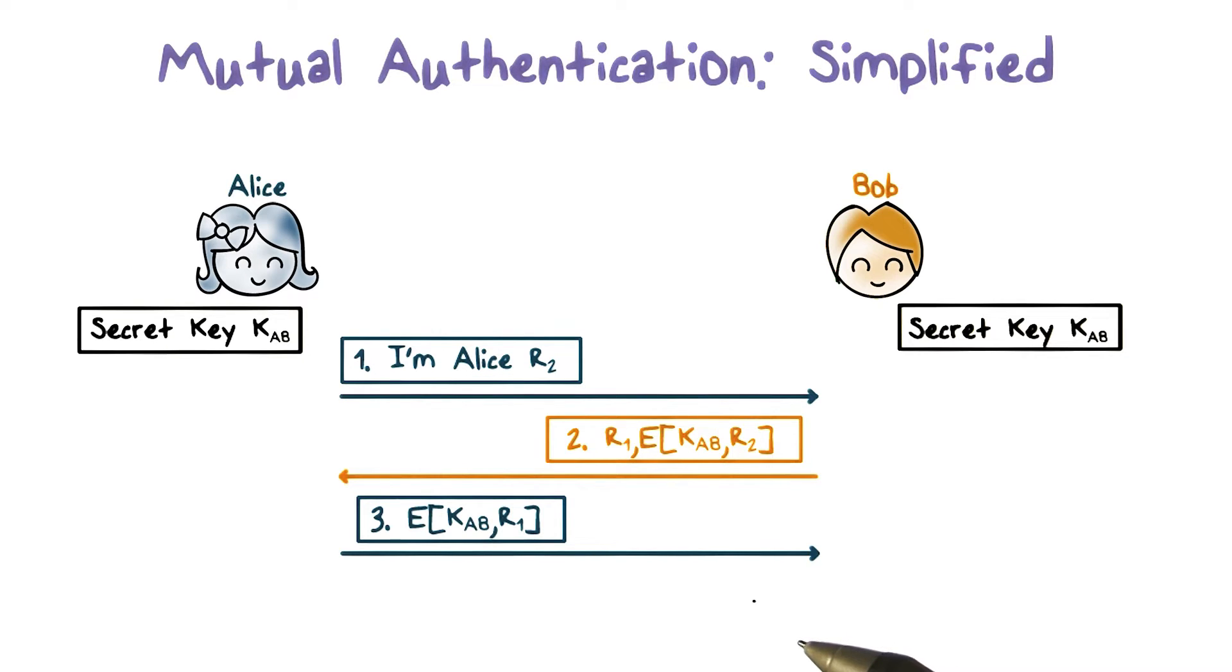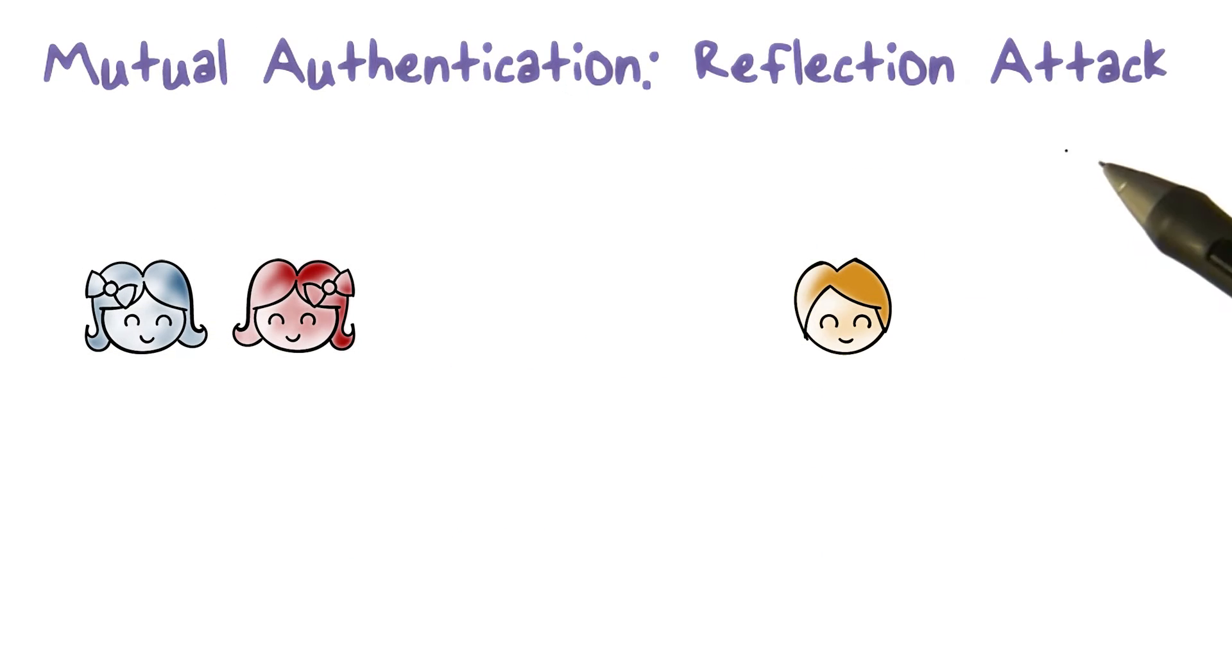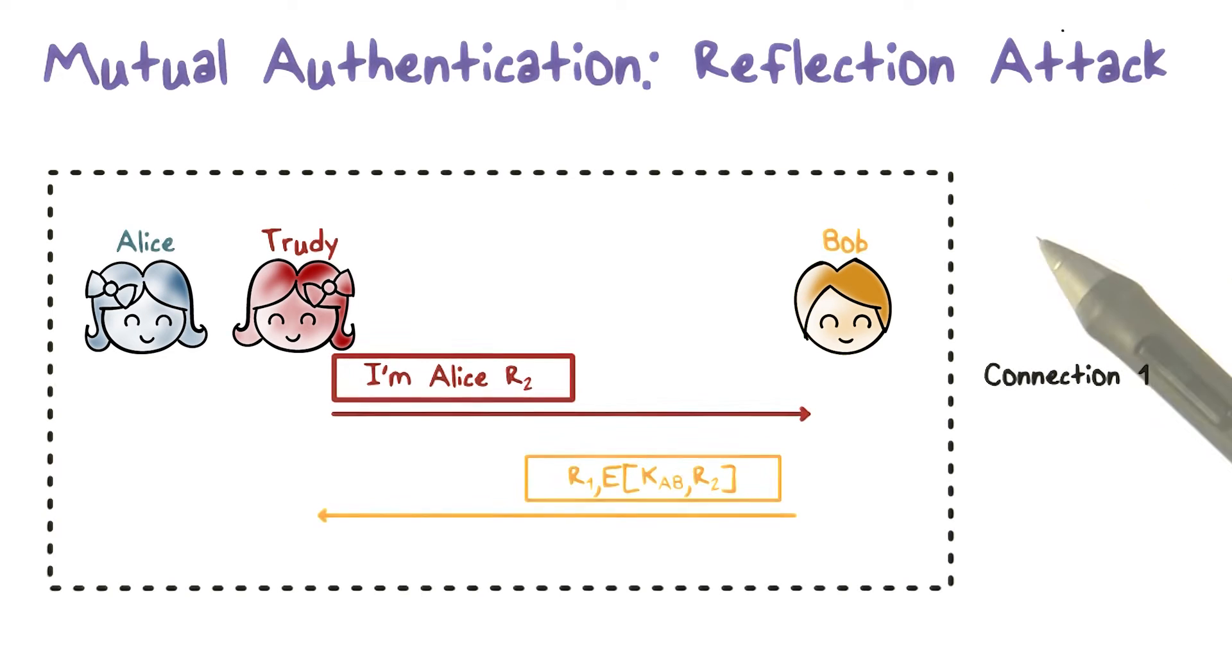Is there anything wrong with this simplified protocol? It turns out that there is a reflection attack, a kind of man in the middle attack. Here's how it works.